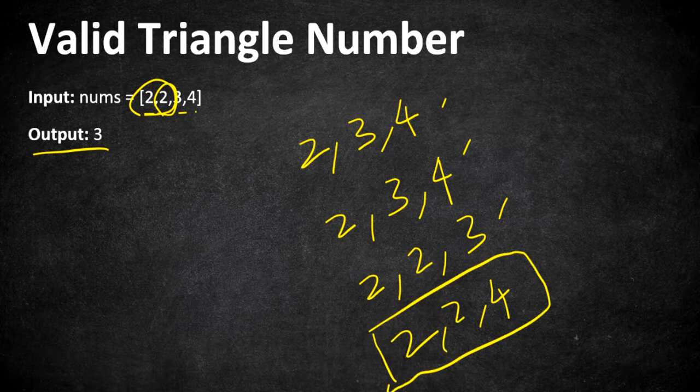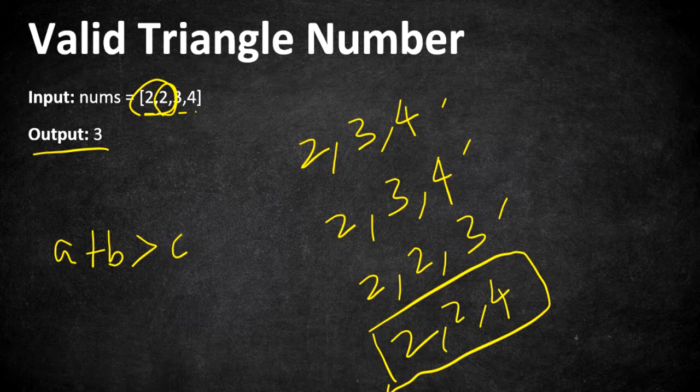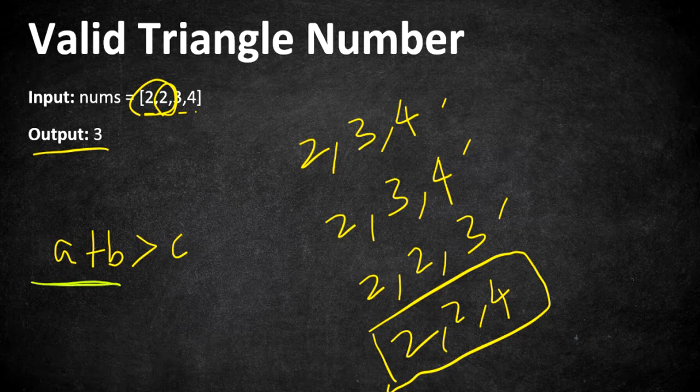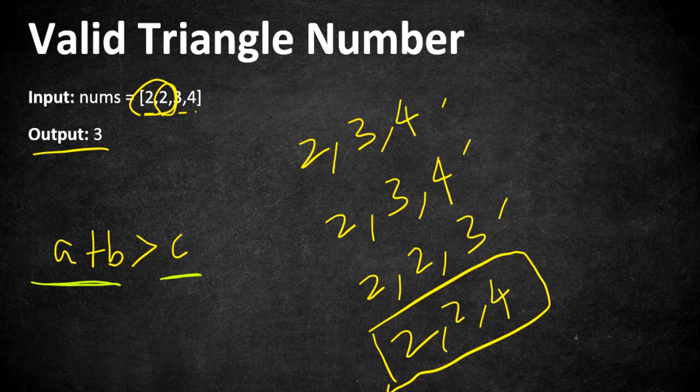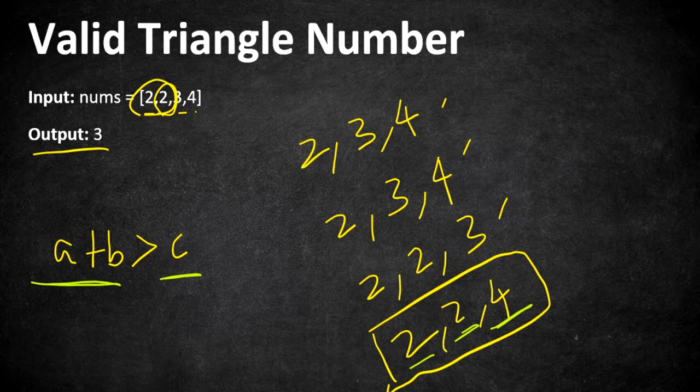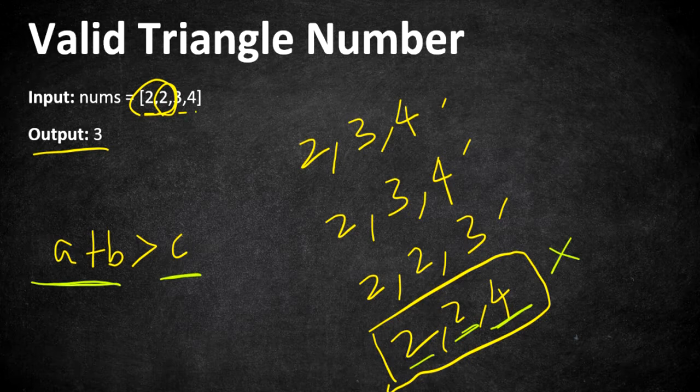There is a property that says a plus b is greater than c, which is nothing but any two sides of the given triangle. The length of any two sides must be greater than the third side. It can be any side, but adding any two sides must be greater than the third side. In this case, if you add 2 plus 2, it is 4, which is equal to the third side but not greater than the third side, so this cannot be coordinates of a triangle. By using this property, we have to approach this problem and get our solution.